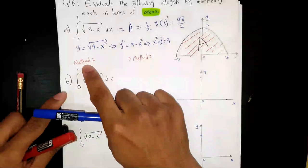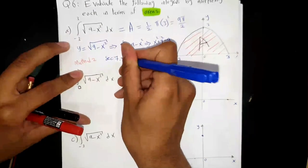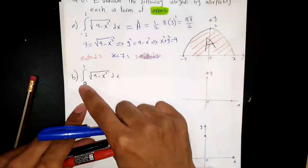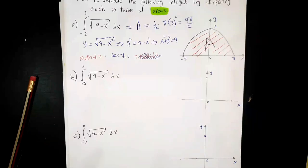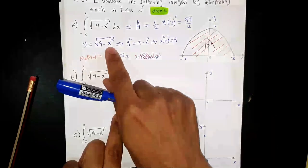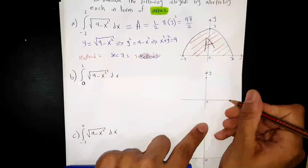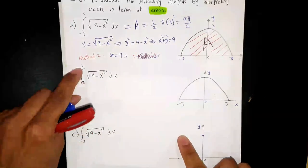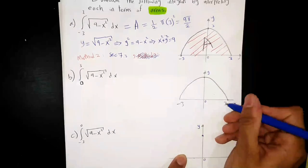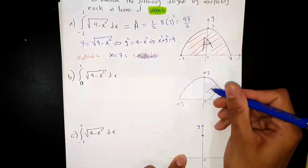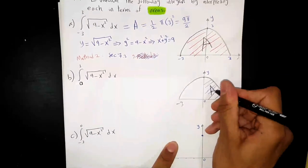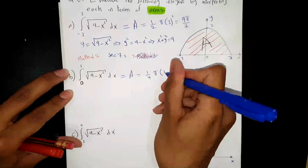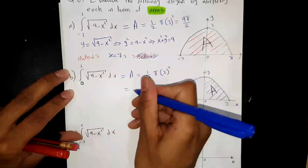This question can also be solved using trigonometric substitution in section 7.3. Part B: the integral from 0 to 3 of √(9 - x²). It is the same question but we integrate from 0 to 3. We let y equal to the root and get the same circle of radius 3 — the upper part. But now we integrate from 0 to 3, so we are interested in only this region, which is a quarter of a circle: (1/4)πr² = (1/4)π(3²) = 9π/4.